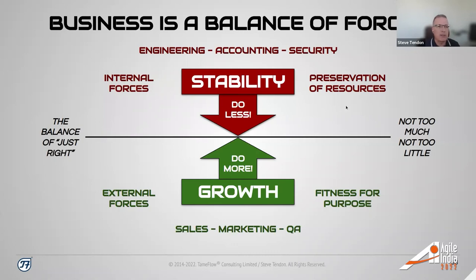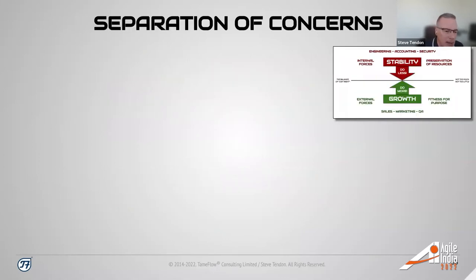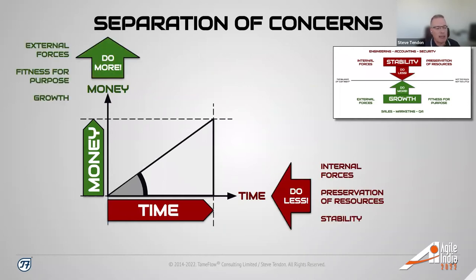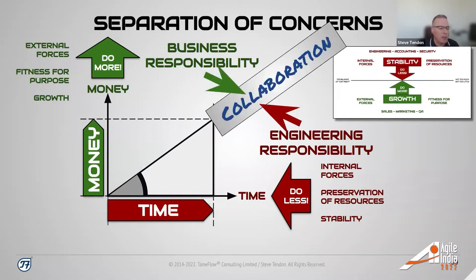These can be classified as external forces that want growth — fighting for fitness for purpose — and internal forces that want stability, fighting for preservation of resources. They are in conflict, and it's when we find the balance that we find the scope of a move. To bring about collaboration, we use the money-over-time diagram: internal forces focus on the time part, wanting to reduce time as much as possible, while external forces focus on the money part, wanting to bring in as much money as possible. With this separation of concerns, business and engineering can collaborate and both aim at increasing the slope of the money-over-time diagram.